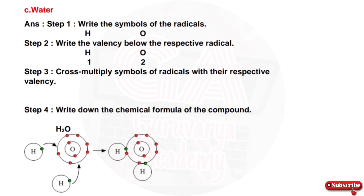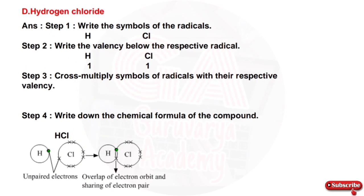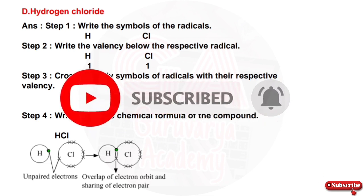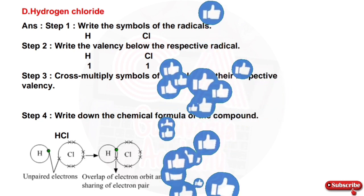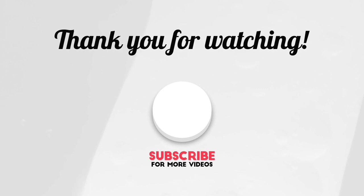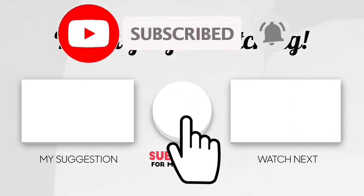The next compound is hydrogen chloride. The chemical formula for the compound is determined similarly based on the radicals and their valence. Thank you very much.